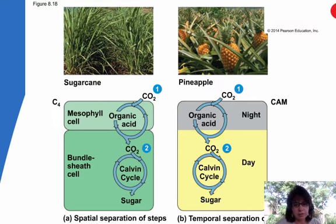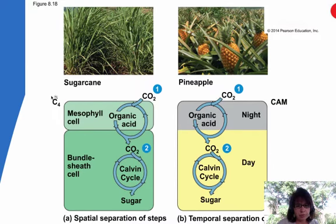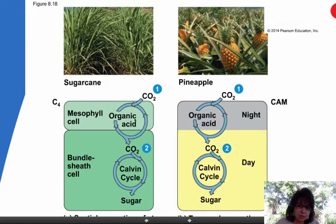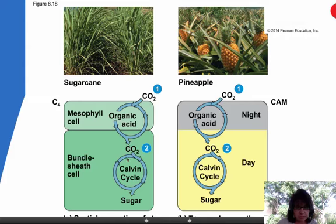Plants needed to evolve a different way of dealing with the heat and closing stomata during the day. There are two systems that evolved. One is called the C4 system. The C4 system spatially separates things by making a mesophyll cell and a bundle sheath cell closer to the veins. Basically, Rubisco gets moved away from where oxygen builds up when stomata are closed. CO2 comes in, gets fixed into a four-carbon organic acid, which then drops off one of its CO2s to the Calvin cycle in the bundle sheath cell, cramming CO2 away from the oxygen so Rubisco can fix it.